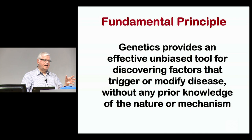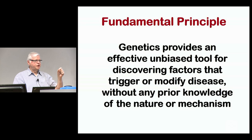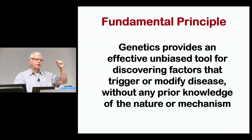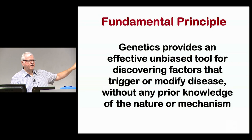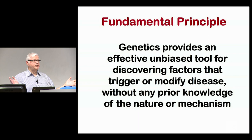We guessed that was the sodium channel based on phenotype, and for once we were right. But for every other disease we worked on, biology didn't lead to the particular gene. Genetics, in an unbiased way, led to it. The fundamental principle of applying genetics — why genetics is so powerful — is that it provides an effective unbiased tool for discovering factors that trigger or modify disease without any prior knowledge of the nature or mechanism. It turns the research path on its head and takes into account the first step of the scientific process that is often ignored: observation. You have to have observation before you generate the hypothesis — the unbiased search is the observation step that gets you to the point of being able to form a reasonable hypothesis.